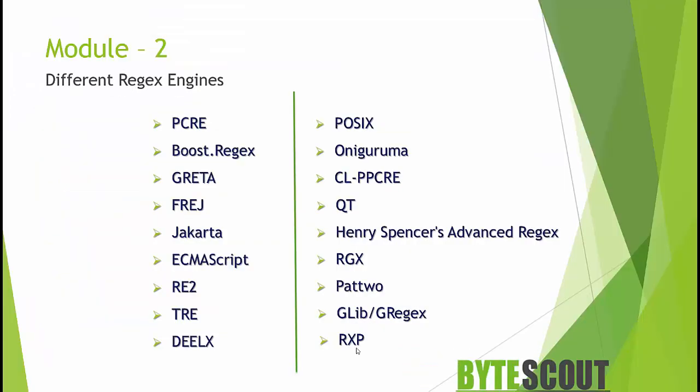When regular expressions were first made available in computing, they only supported a very limited number of syntaxes. But over time, people wanted to match more complex patterns, so they started expanding and adding more advanced features and syntaxes. They built their own regex libraries or engines with their own syntax variations. Today, according to Wikipedia, there are more than 25 different regex engines widely used, each with their own regex dialects.